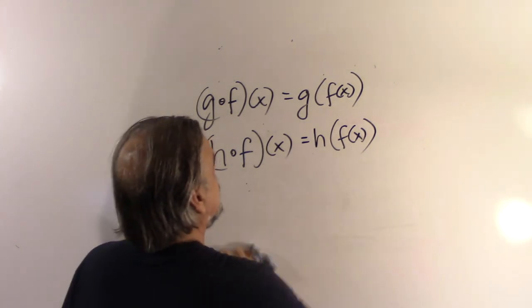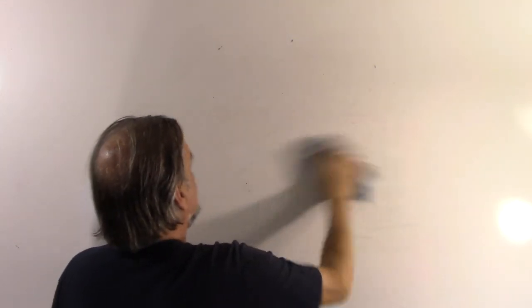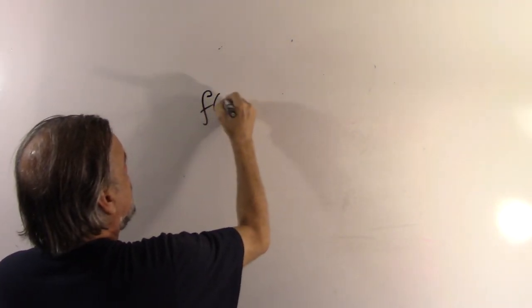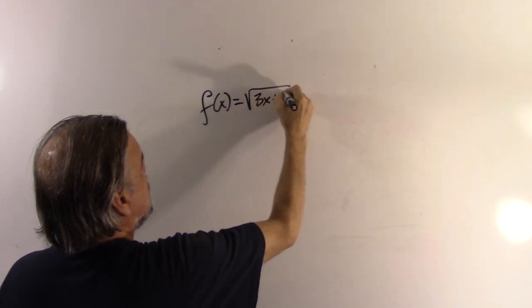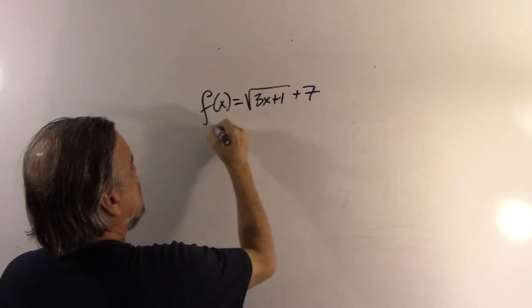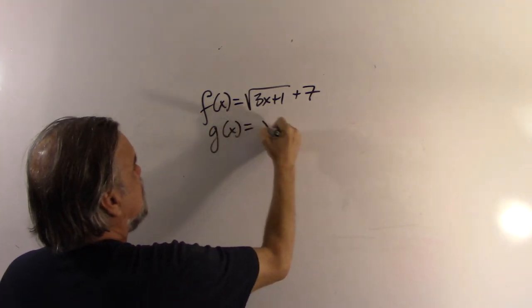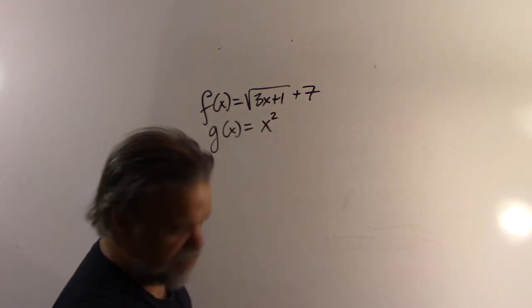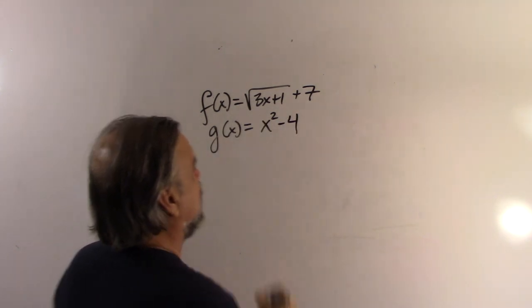So, let's take a look at a couple more functions. Let's say f(x) is the square root of 3x plus 1 plus 7. And let's say g(x) is x squared minus 4.